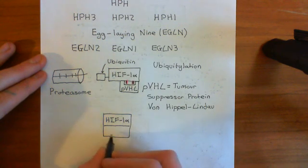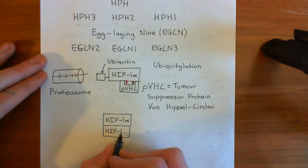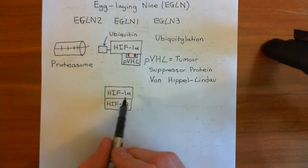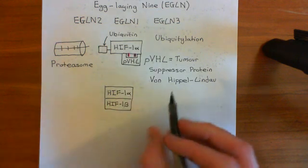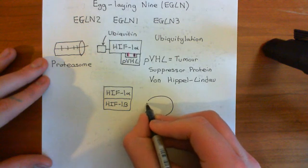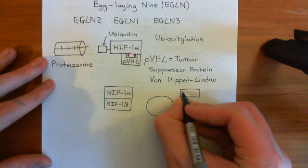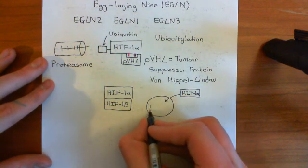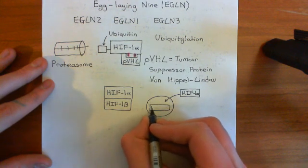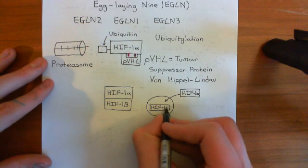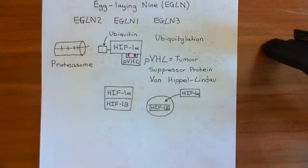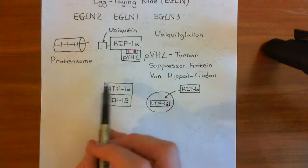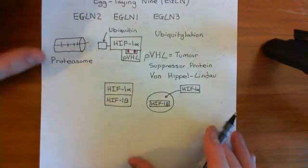What does the HIF-1 complex do within the cell? The complex acts in the nucleus. When HIF-1α is stabilized and not destroyed, it is initially in the cytoplasm. It then goes into the nucleus, where it meets HIF-1β, which is already there. Together they form a heterodimer, which acts as a transcription factor.